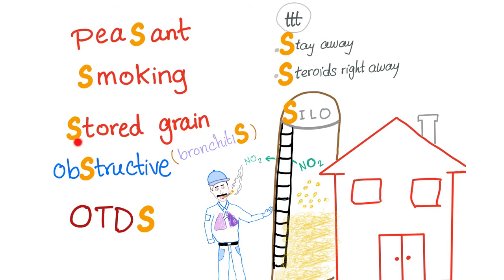Again, peasant, smoking, stored grains, obstructive, bronchitis, OTDS, stay away or steroids right away, silo fillers lung.